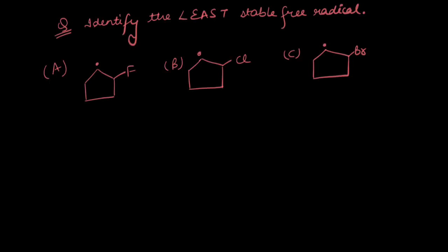In this question, we are asked to identify the least stable free radical. What do we know about the free radical? In a free radical, there are about 7 electrons around the carbon atom, so it is an electron-deficient species, and the electron-donating groups would help it get stabilized.